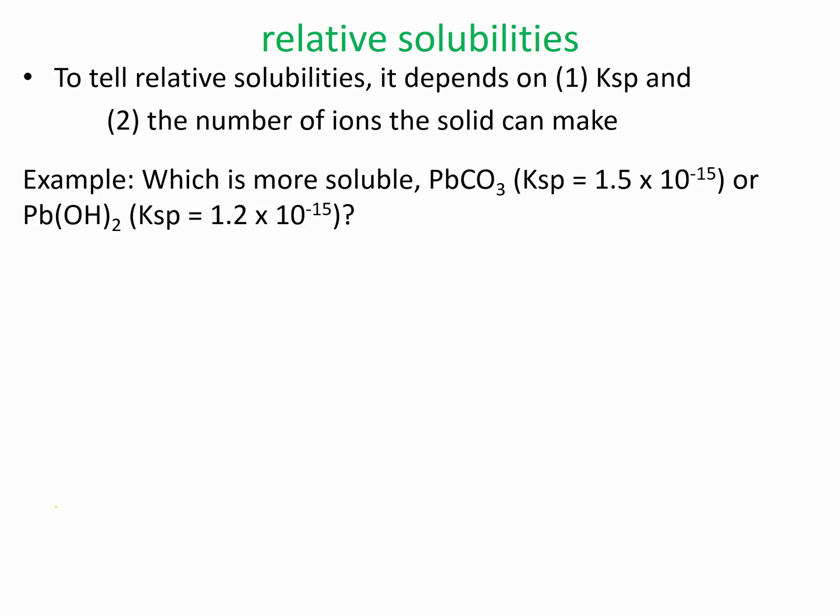So here we see that our samples have a similar Ksp, but one of them makes more ions than the other. So I am going to predict that this one is more soluble. And you can verify this by calculating the amount of X that shifts over to the right. So you'll see that what happens when you have more ions, you'll see what happens with the exponent.